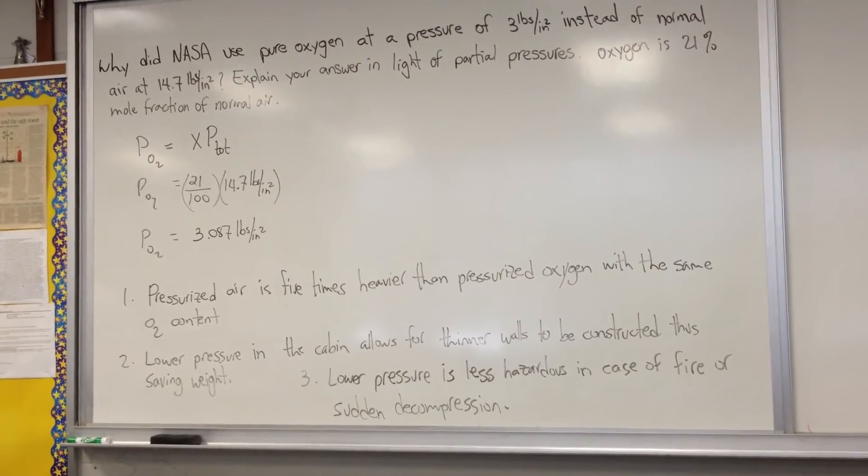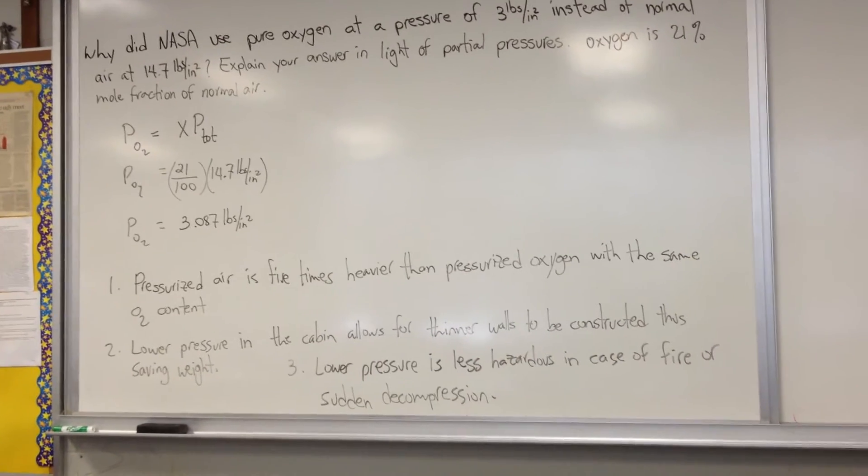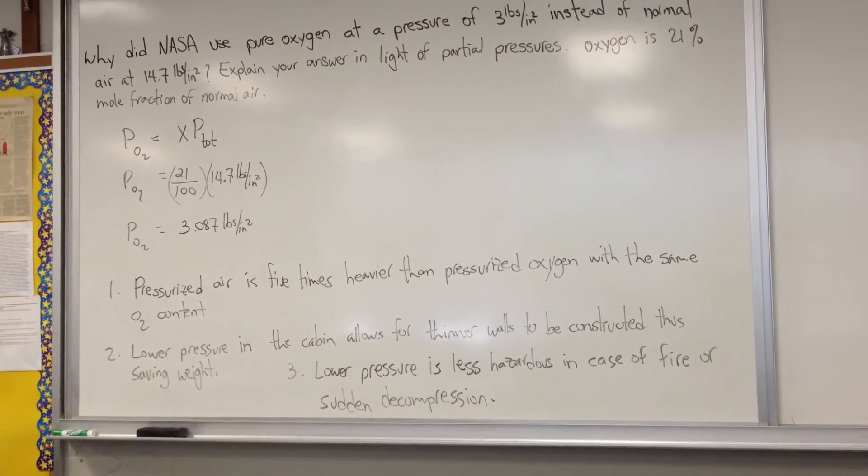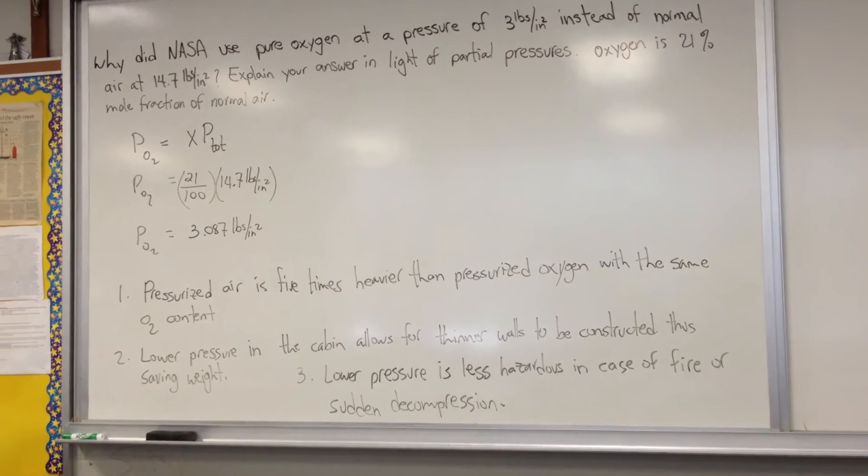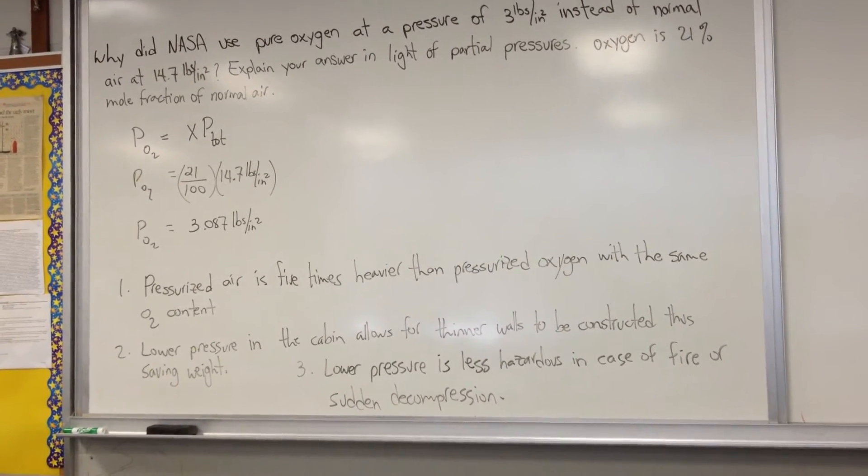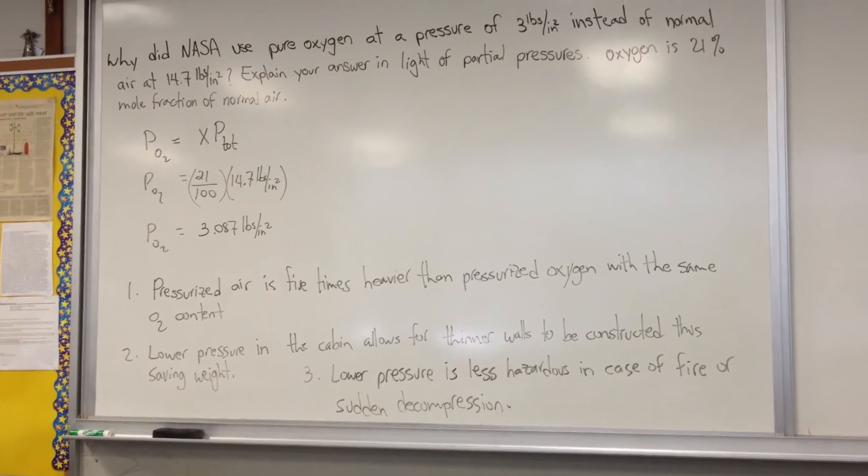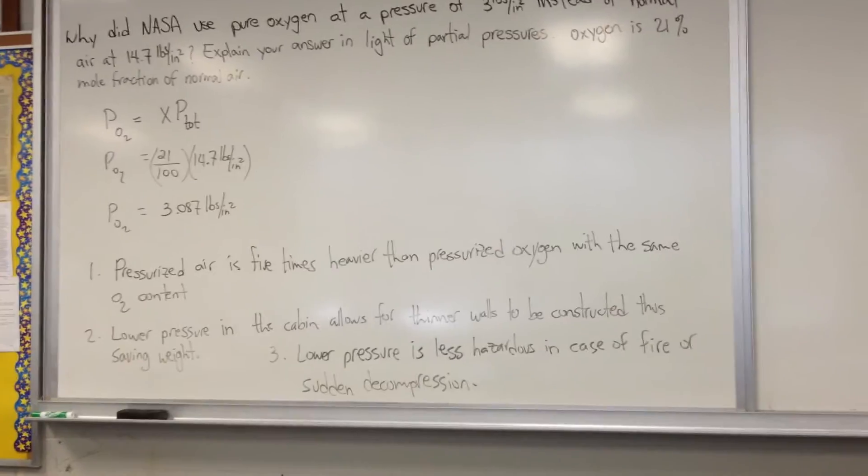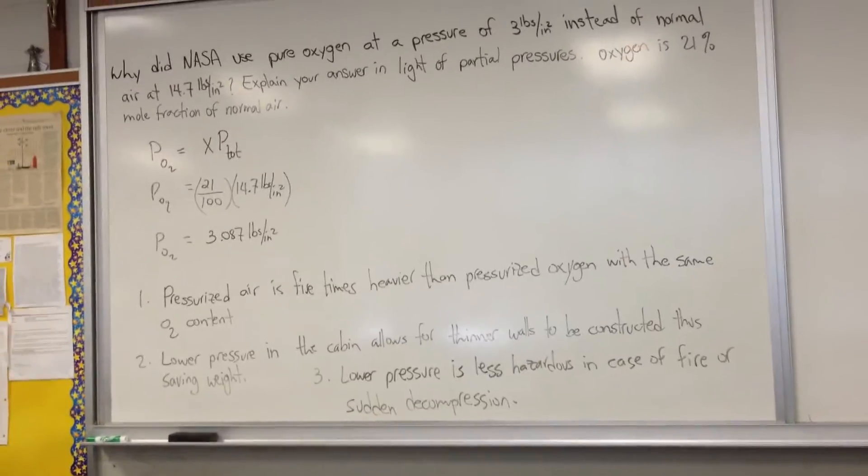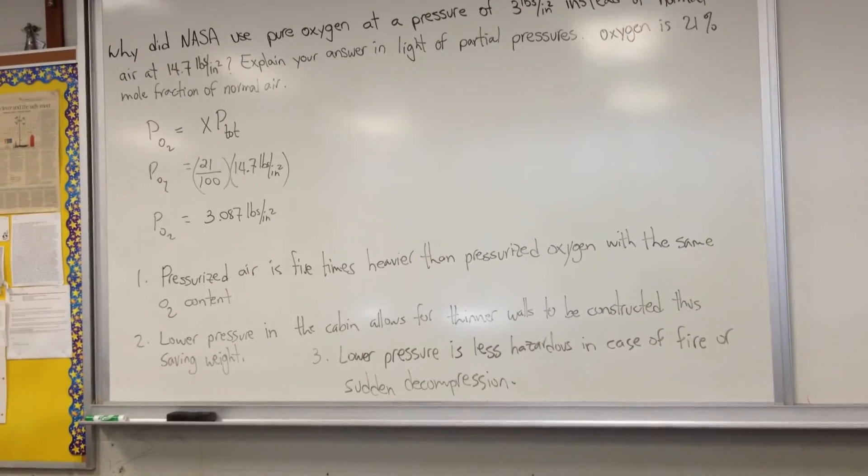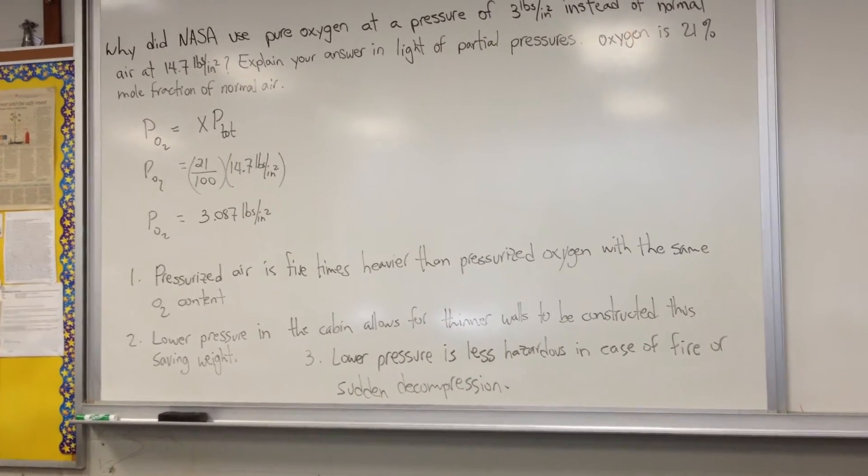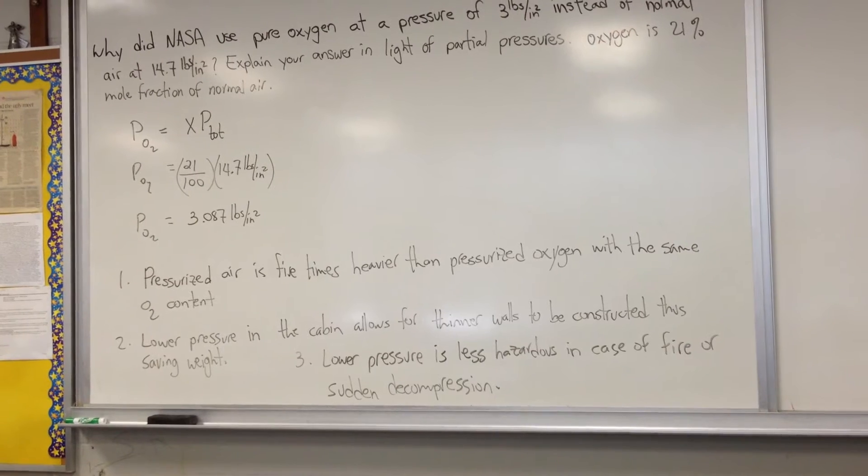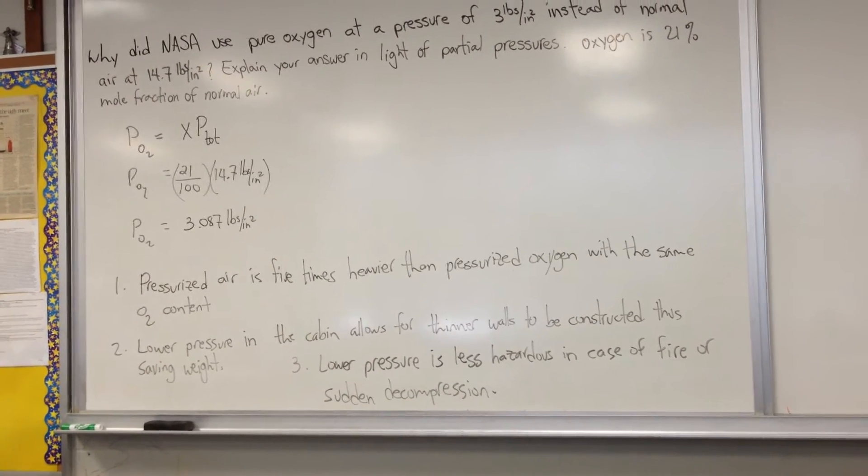The second advantage of giving them three pounds per square inch of pure oxygen instead of full atmospheric air at 14.7 was a lower pressure in the cabin allows for thinner walls to be constructed. The lunar landing module was constructed of the thinnest materials possible while not sacrificing safety. As it turns out, the lunar landing module walls were about as thick as a credit card.